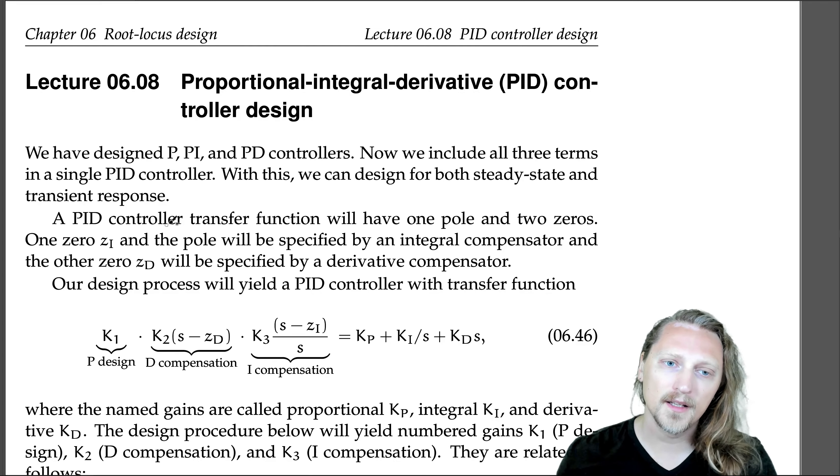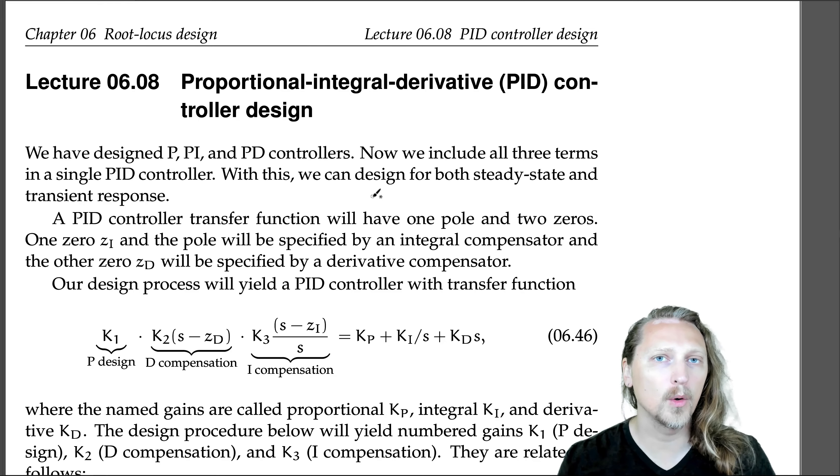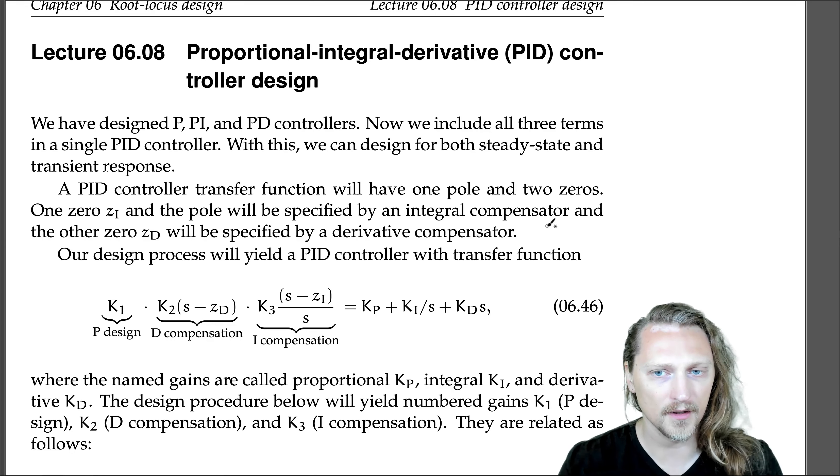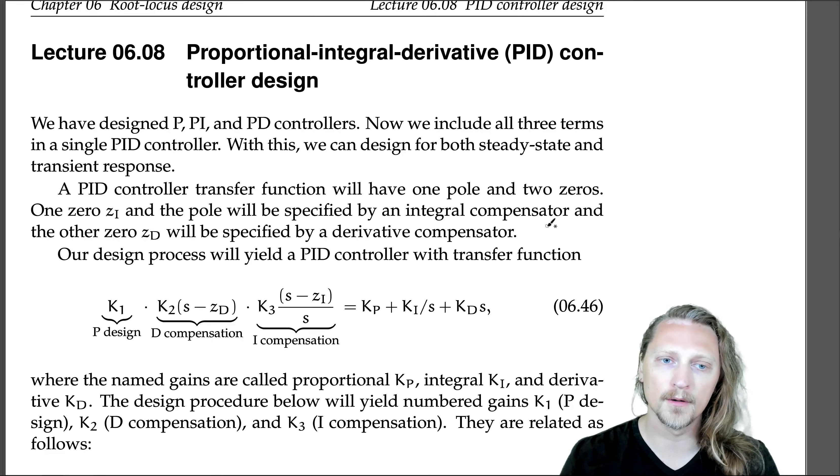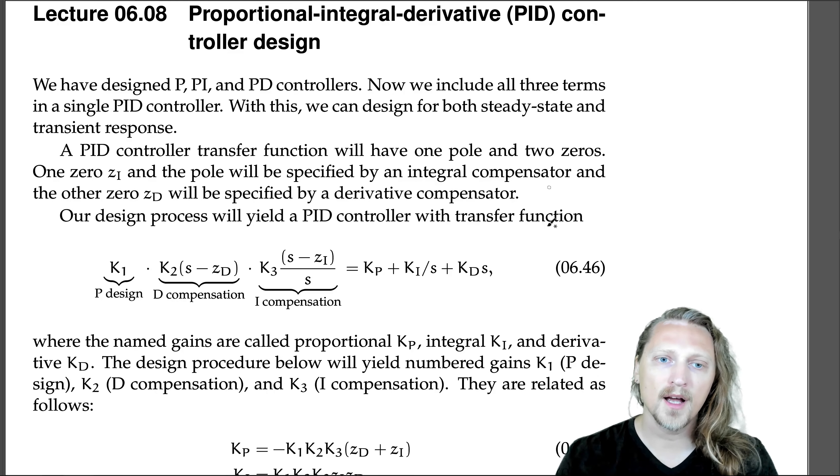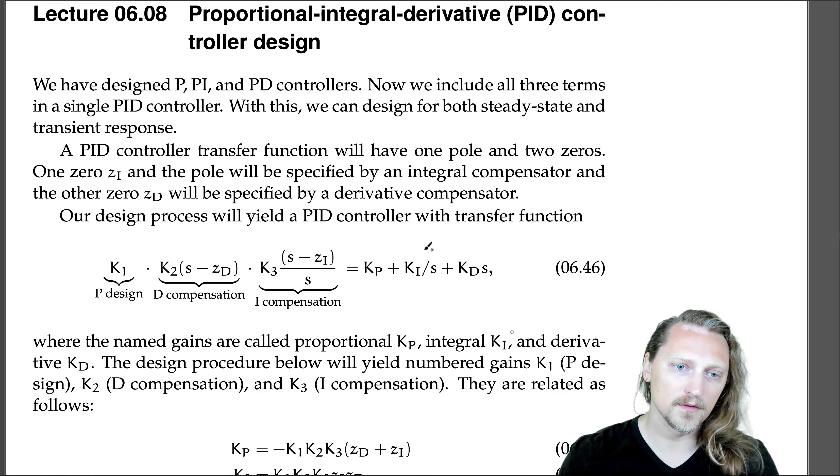A PID controller transfer function will have one pole and two zeros. One zero zi and the pole will be specified by an integral compensator, and the other zero zd will be specified by a derivative compensator. Our design process will yield a PID controller with the transfer function